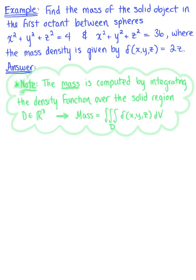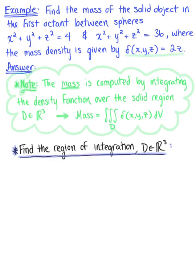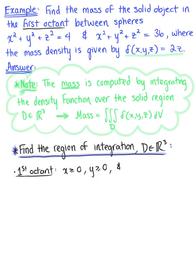We have the density function, but we need to find the region of integration — our solid region D in space. Looking back at the question, this solid object is in the first octant, which implies that all variables are greater than or equal to 0: x ≥ 0, y ≥ 0, and z ≥ 0.